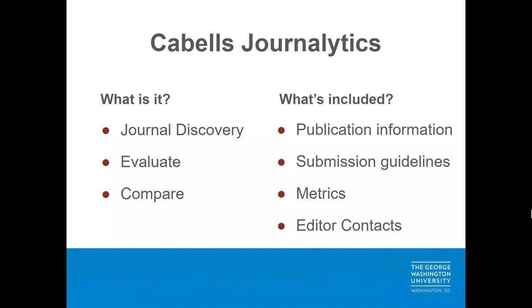Each journal record also includes submission guidelines including submission methods, acceptance rate, manuscript guidelines, and style guidelines. Peer review information is also available including the type of peer review provided, the typical length of the review period, the number of reviewers, and the time to publication.